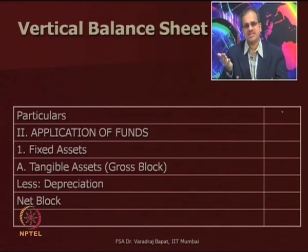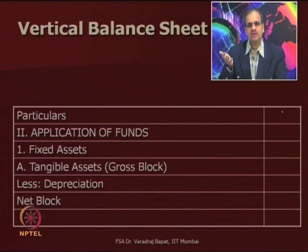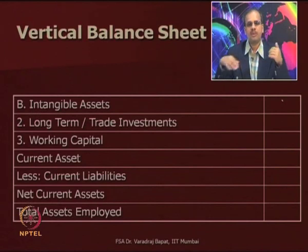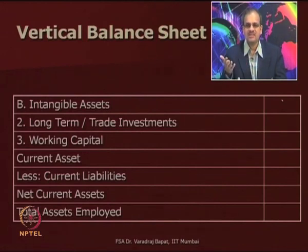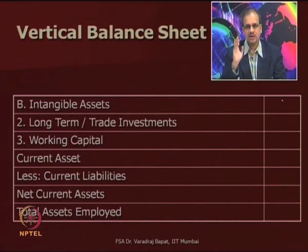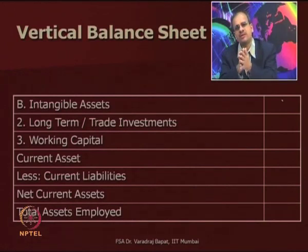Under application of funds, the first item is fixed assets, divided into tangible (gross block minus depreciation equals net block) and intangible assets. The second is long-term or trade investments. The third is working capital, which consists of current assets less current liabilities. Fixed assets plus long-term investment plus working capital gives total assets employed. The total of funds employed should match with total of assets employed.